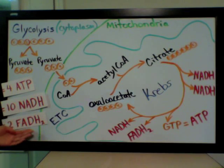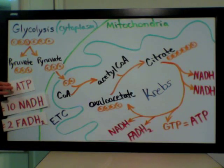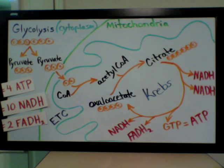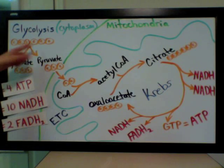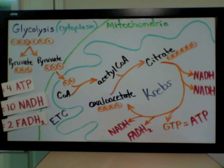All of the NADHs and FADH2s will go into the electron transport chain to be converted into more ATPs. From the ten NADHs we get 30 ATPs, and from the two FADH2s we get four more ATPs — making 4 plus 30 plus 4 for a total of 38 ATPs from one glucose molecule. Keep in mind this is only in the most efficient cell under the most ideal circumstances, so 38 is a theoretical number. In reality, that number is closer to 30.